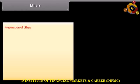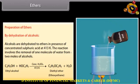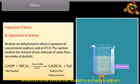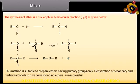Ethers — Preparation: by dehydration of alcohols. Alcohols are dehydrated to ethers in the presence of concentrated sulfuric acid at 413 K. The reaction involves removal of one molecule of water from two moles of alcohol. The synthesis of ether is a nucleophilic bimolecular reaction. This method is suitable to prepare ethers having primary groups only; dehydration of secondary and tertiary alcohols to give corresponding ethers is unsuccessful.